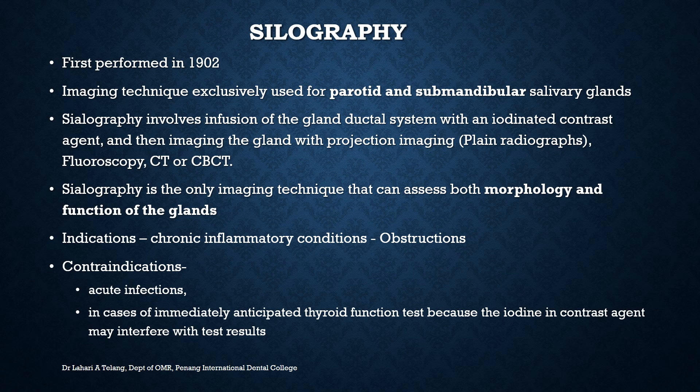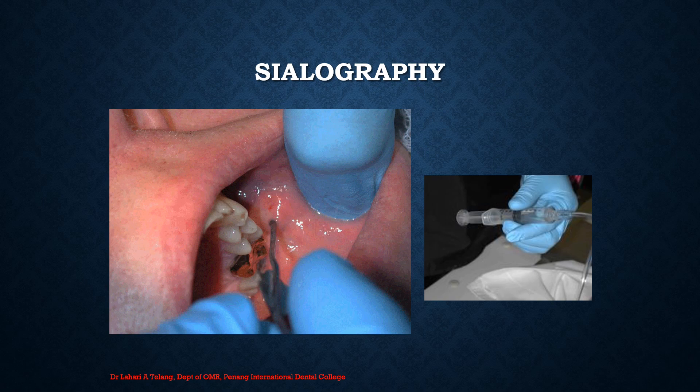The indications for sialography include chronic inflammatory conditions and obstructions of the ductal system. Contraindications include acute infections or cases where thyroid function tests are anticipated shortly, as the iodine in the contrast agent may interfere with test results. The procedure involves locating the Stenson's duct opening and performing retrograde injection of the dye into the ductal system.